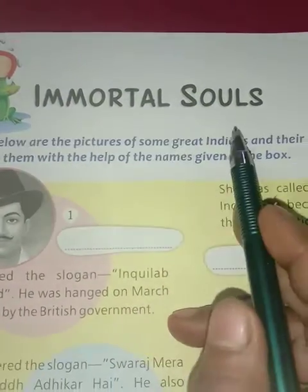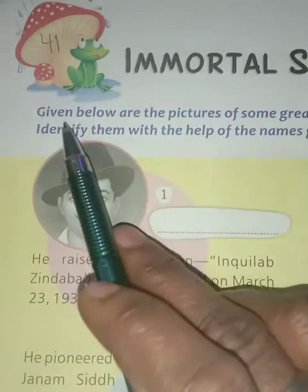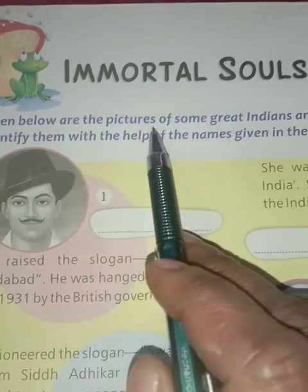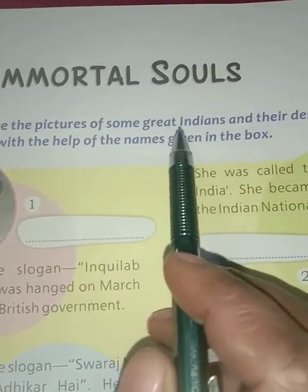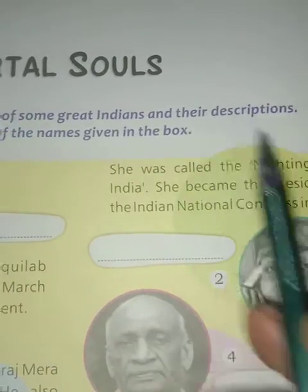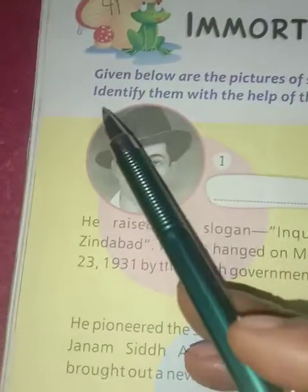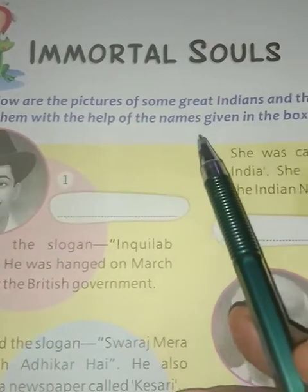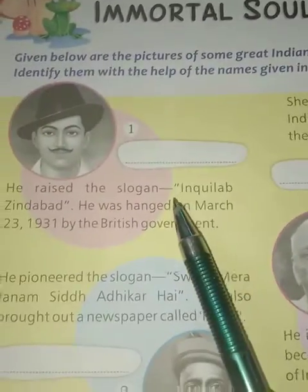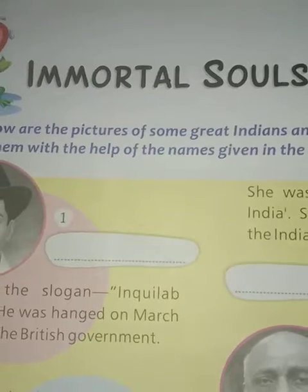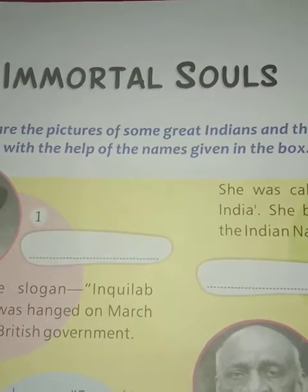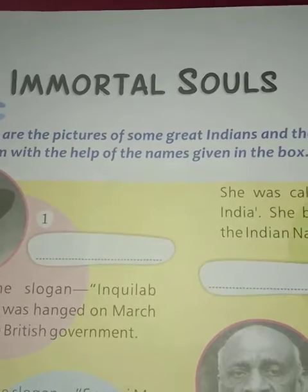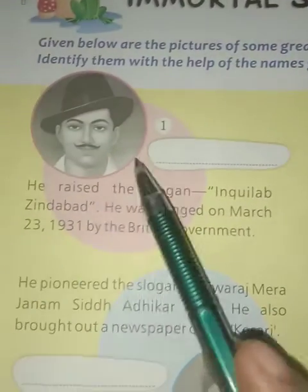Now lesson 41 — Immortal Souls. Given below are pictures of some great Indians and their descriptions. Identify them with the help of the names given in the boxes. Immortal souls means living forever.